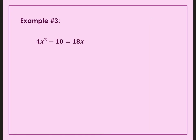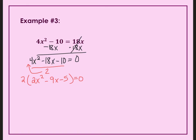For this next one, I want you to move everything to one side, put it in descending order, and take out the GCF. Go ahead and pause this video and try doing that step on your own. Then make the table to do factors of AC whose sum is B — find out what I need to break B up into. Go ahead and pause the video and try this on your own.